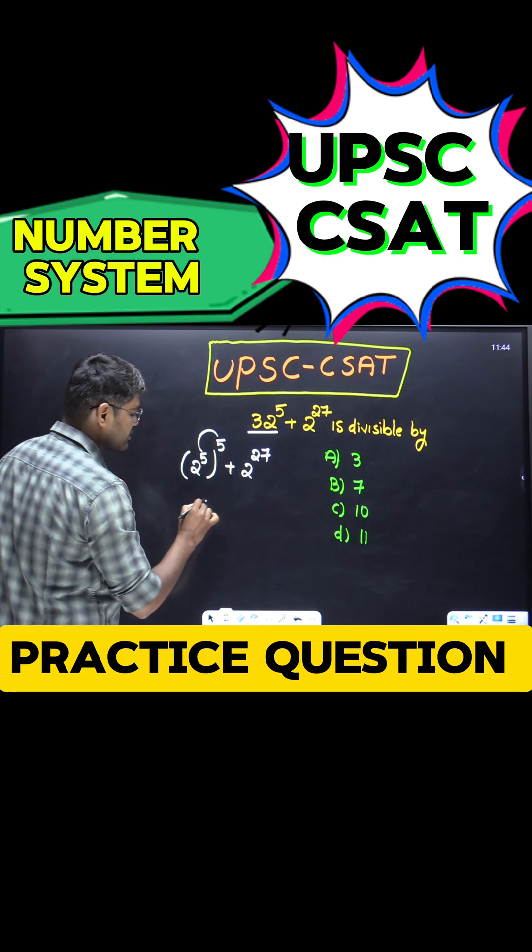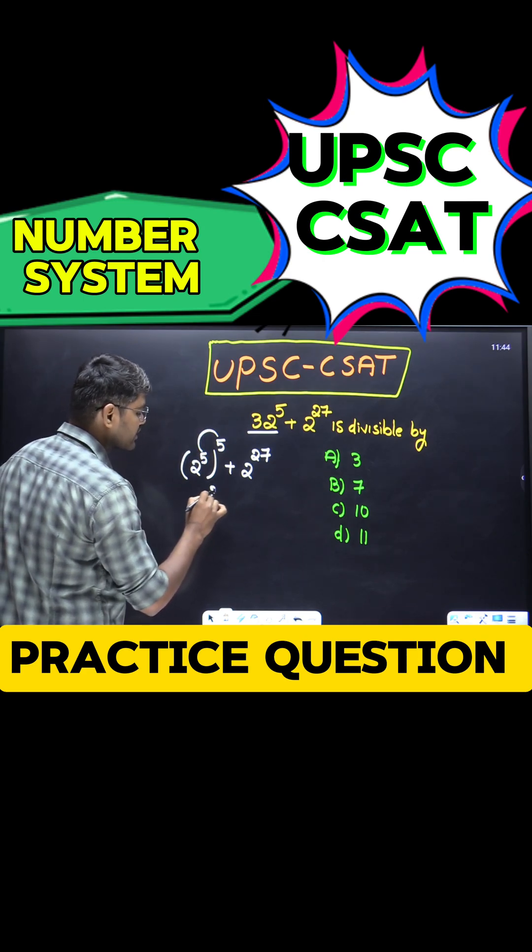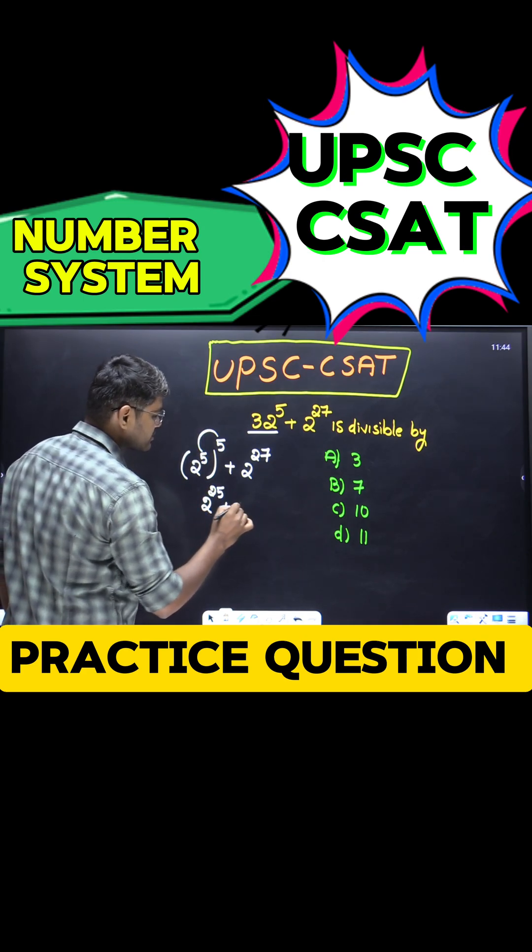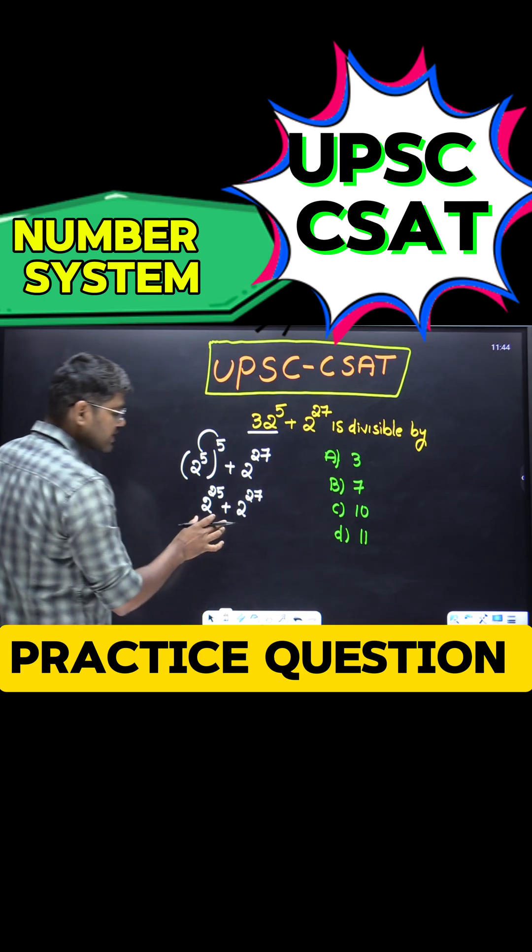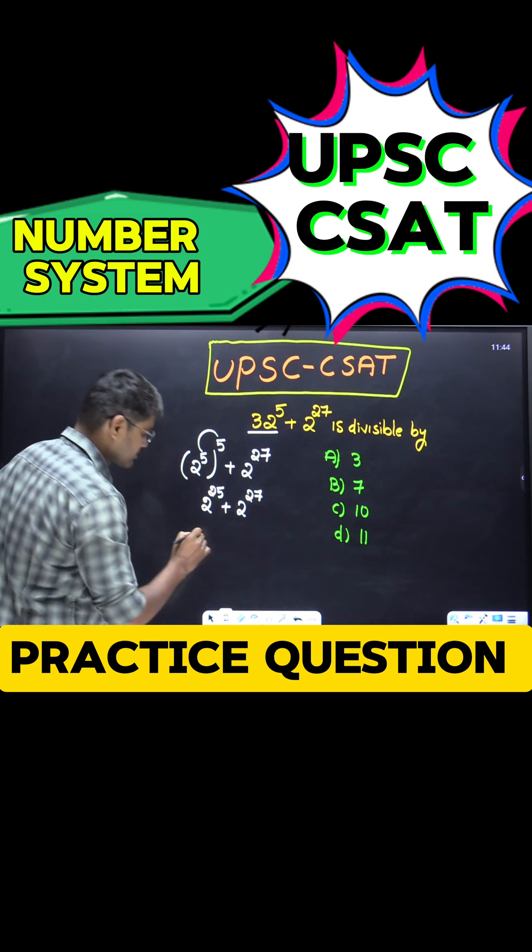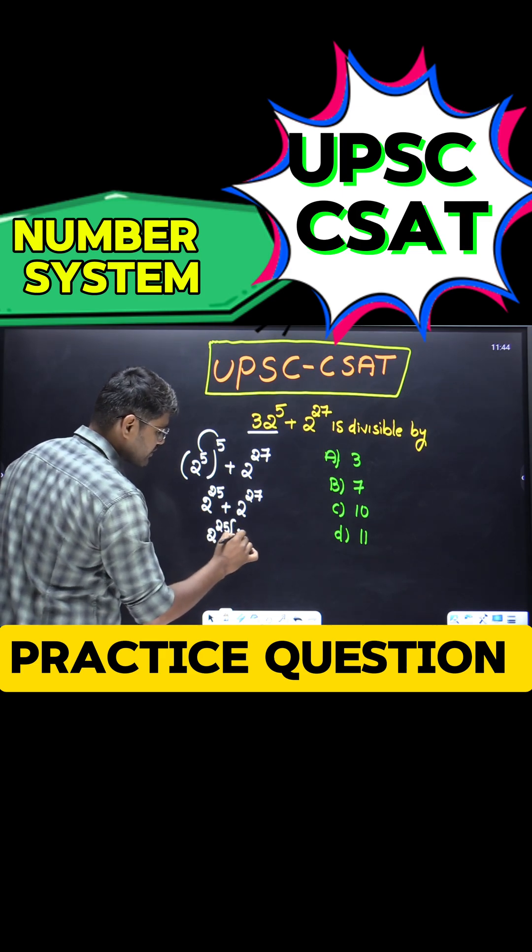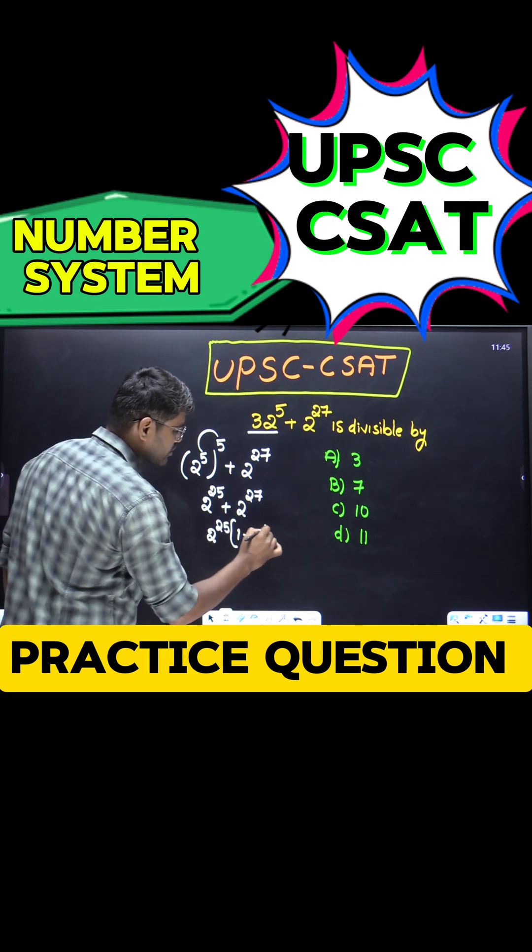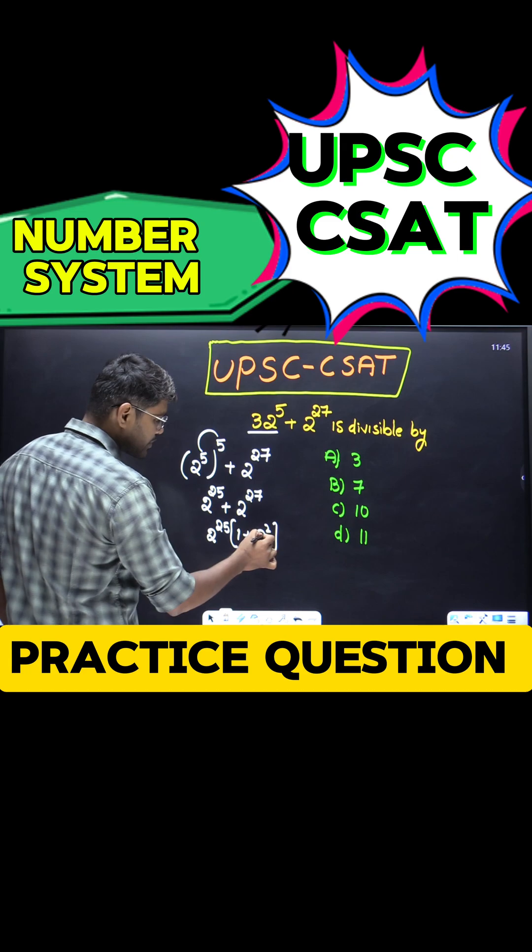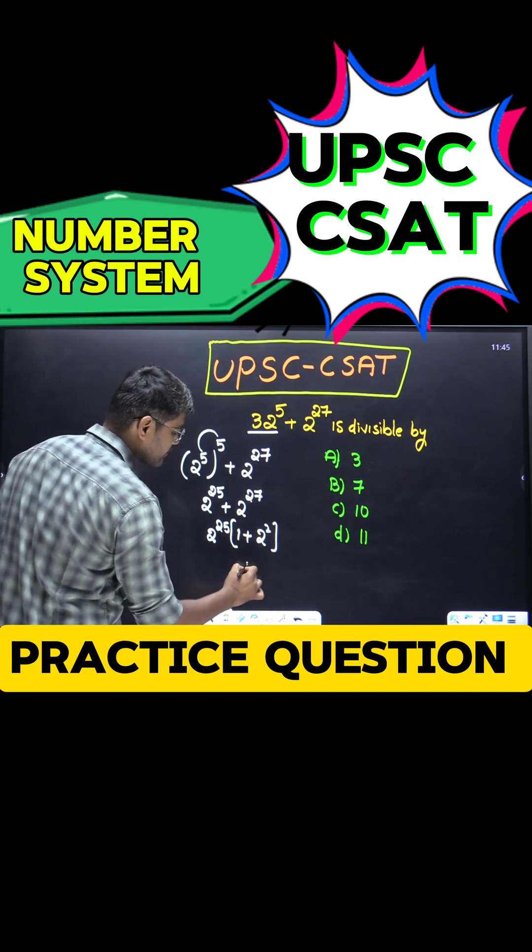So a^(mn): 2^(5×5) = 2^25 + 2^27. We can take 2^25 common. Here 1 will be there, and here 2^2 will be there. So 2^2 + 1, this is 4, 4 + 1 equals 5.